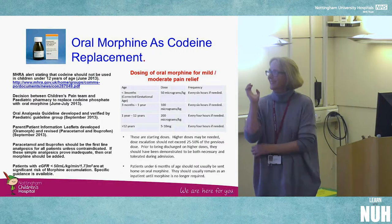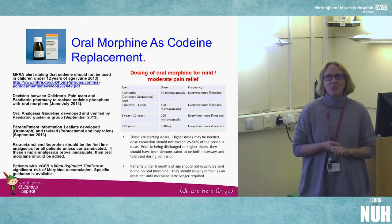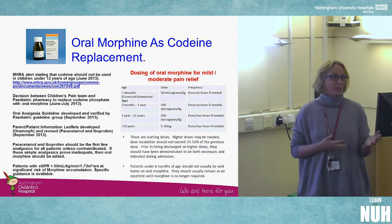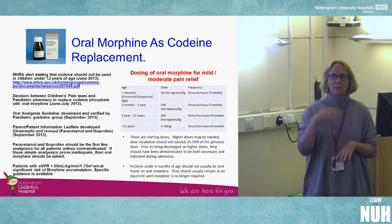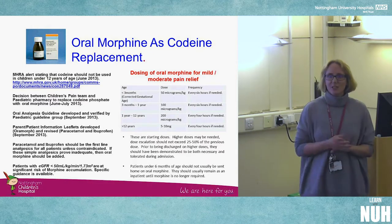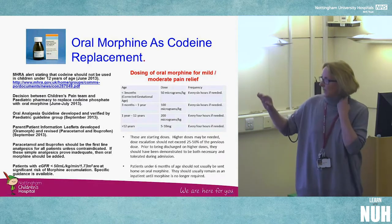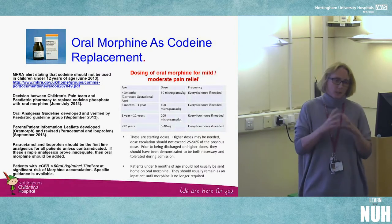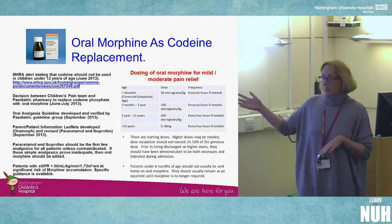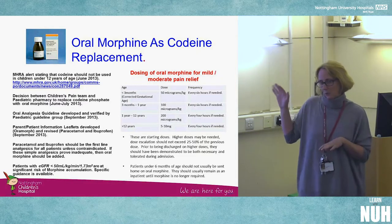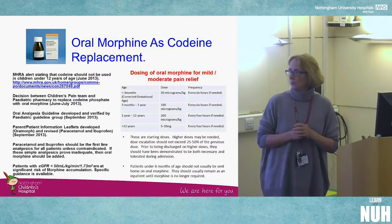The MHRA issued an alert in June 2013 stating codeine shouldn't be used in children 12 years and under, and also should not be used in young people under 18 with documented obstructive sleep apnoea. It can be hard to document OSA in children because you can't always get a sleep study, so we decided to remove codeine from our formulary. We developed a low-dose oral morphine formulary — lower than BNFc dosing — for moderate pain. This is the basis for our tonsillectomy management, with titration to effect and avoidance of opiates in patients with severe obstructive sleep apnoea.